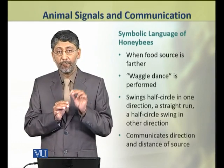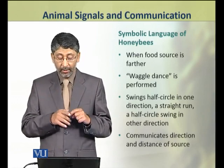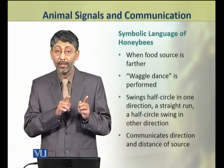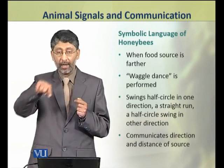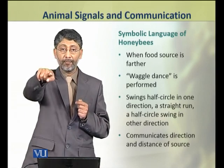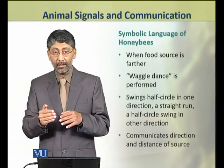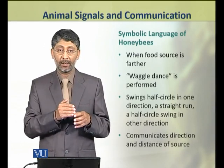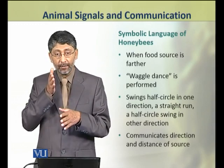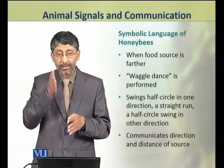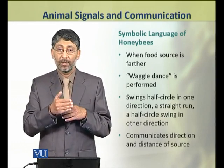When the honeybee finds a food source which is further away, the returning honeybee will perform a waggle dance. In the waggle dance, it swings a half circle in one direction, then makes a straight run, and then a half circle in the opposite direction. This signal communicates to the other members of the species — the residents of that hive — the direction and the distance of the food source. This is the symbolic language through which honeybees communicate.